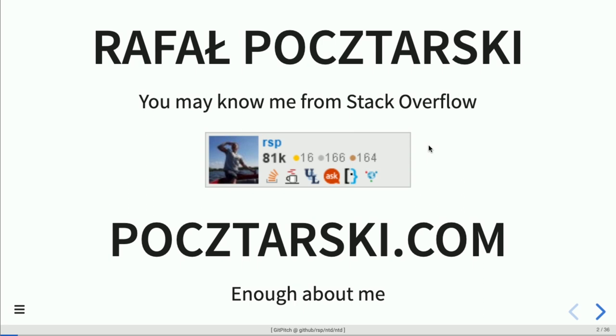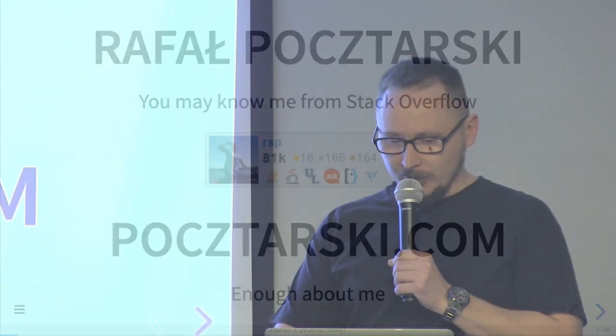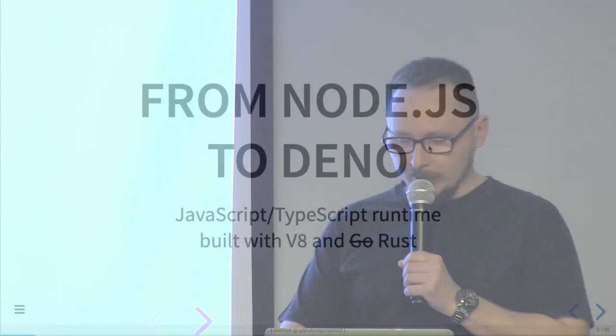If you are active with JavaScript, and especially Node.js, then you might have seen one of my answers. So the talk is 'From Node.js to Deno' — a JavaScript runtime built with V8 and Rust. It was originally planned to be built in Go, but right now it has already been ported to Rust.